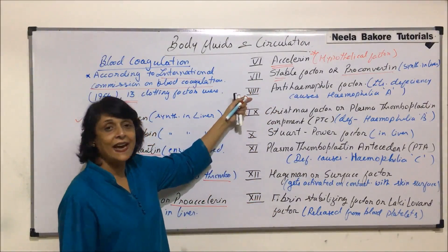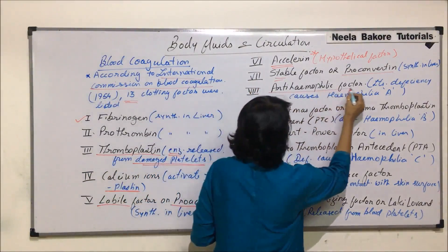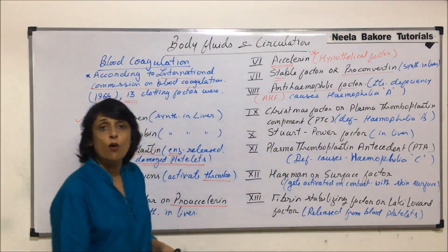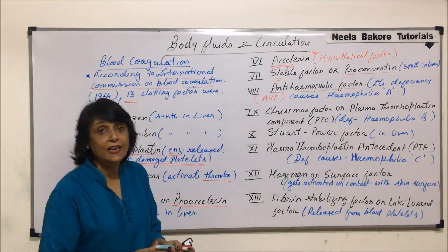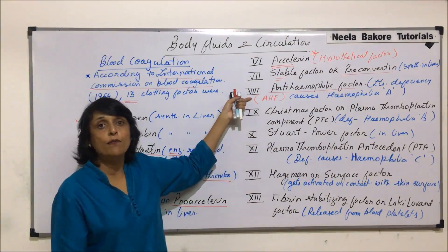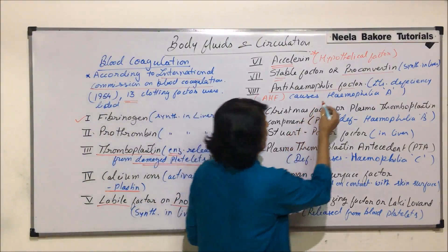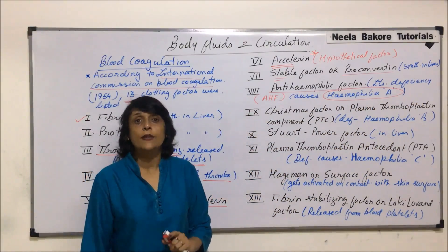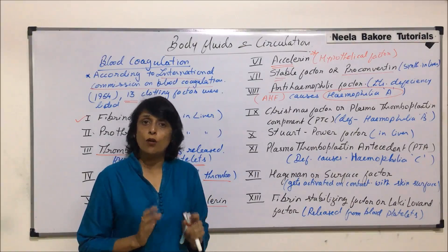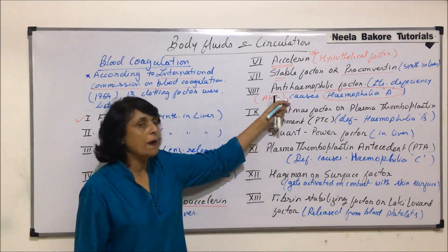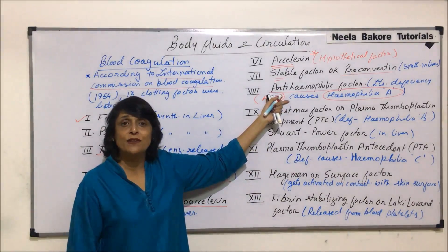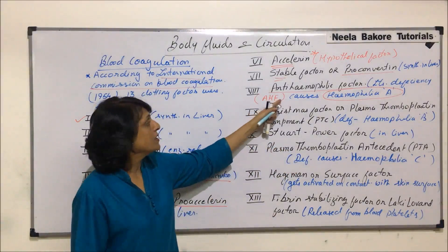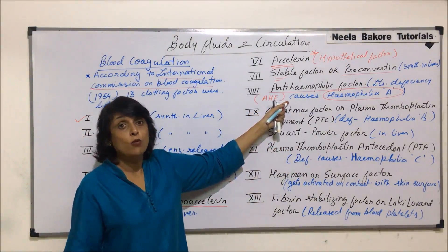The eighth factor is known as anti-hemophilic factor, abbreviated AHF. Importantly, the deficiency of this factor is responsible for causing Hemophilia A. Hemophilia is a condition where blood clotting is delayed or the clotting time increases, and depending on which factor is deficient, we call it hemophilia A, B, or C.